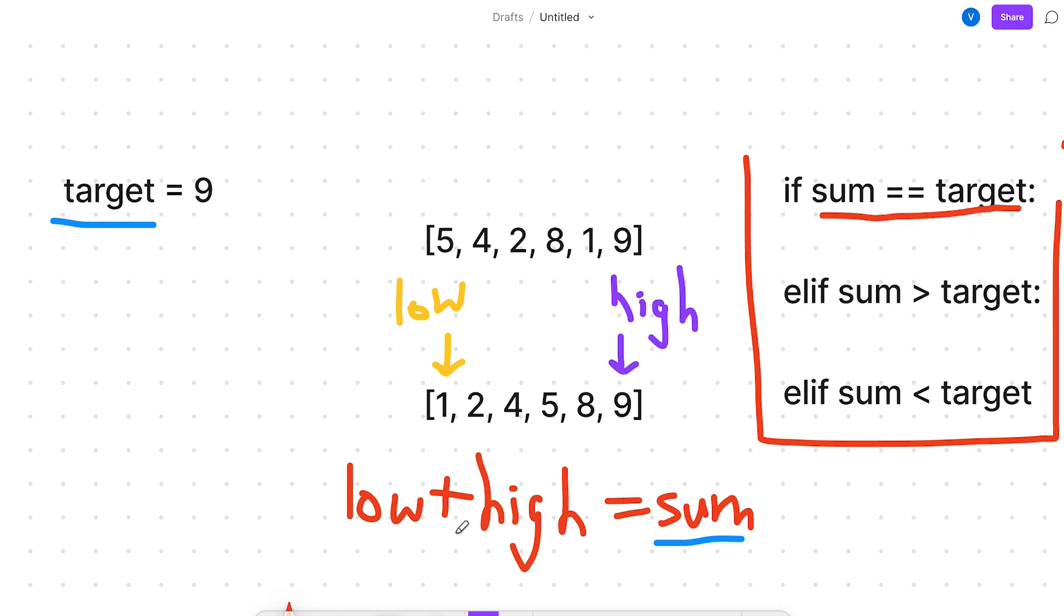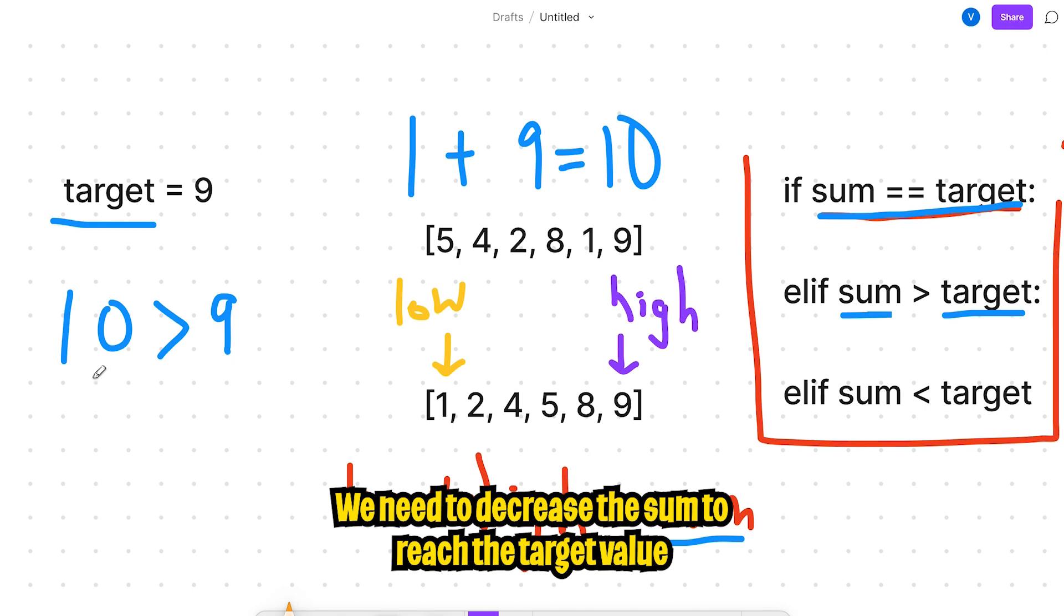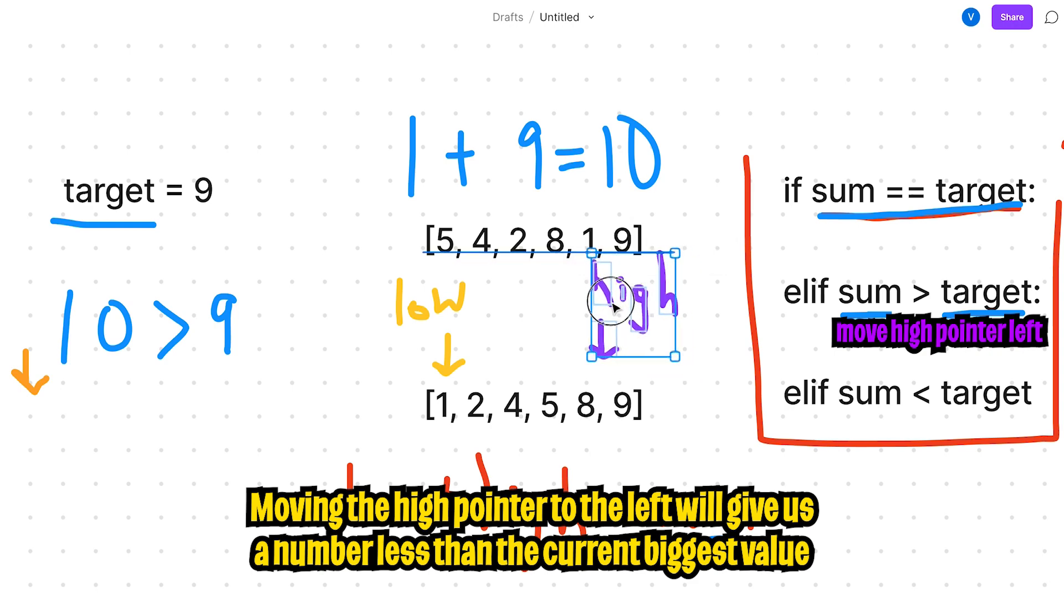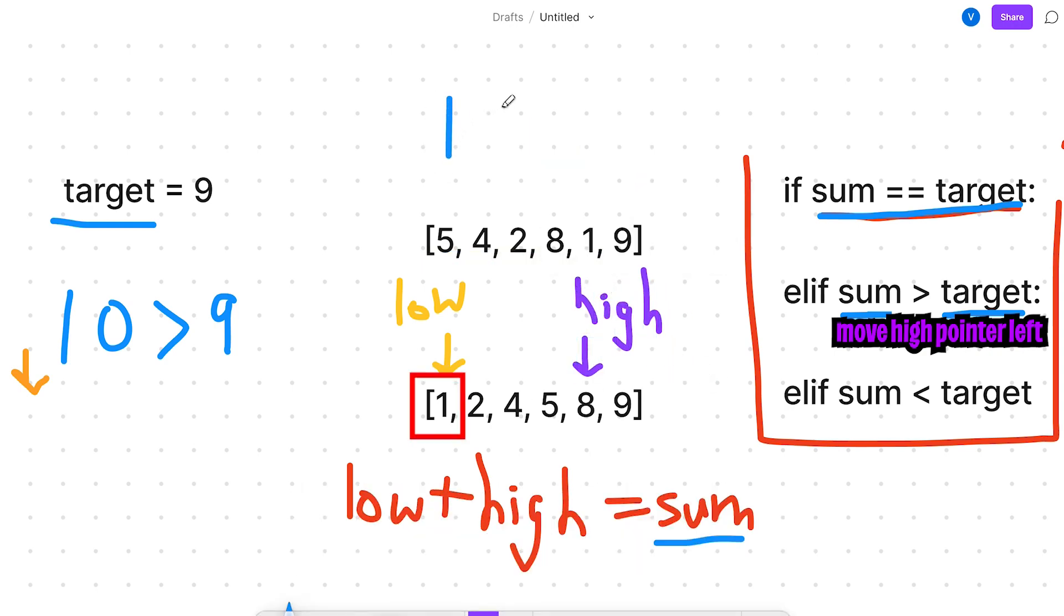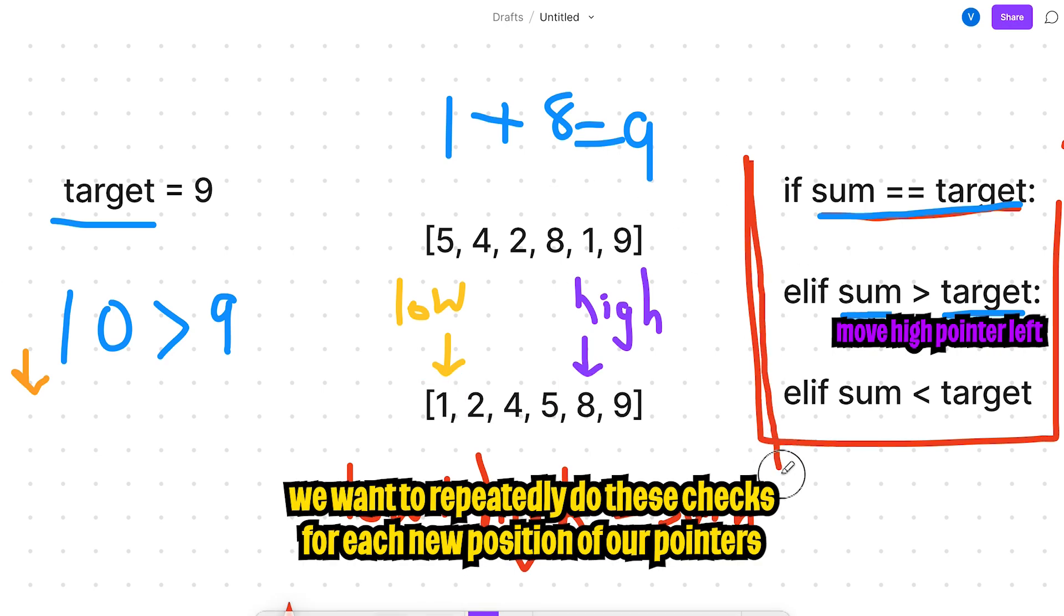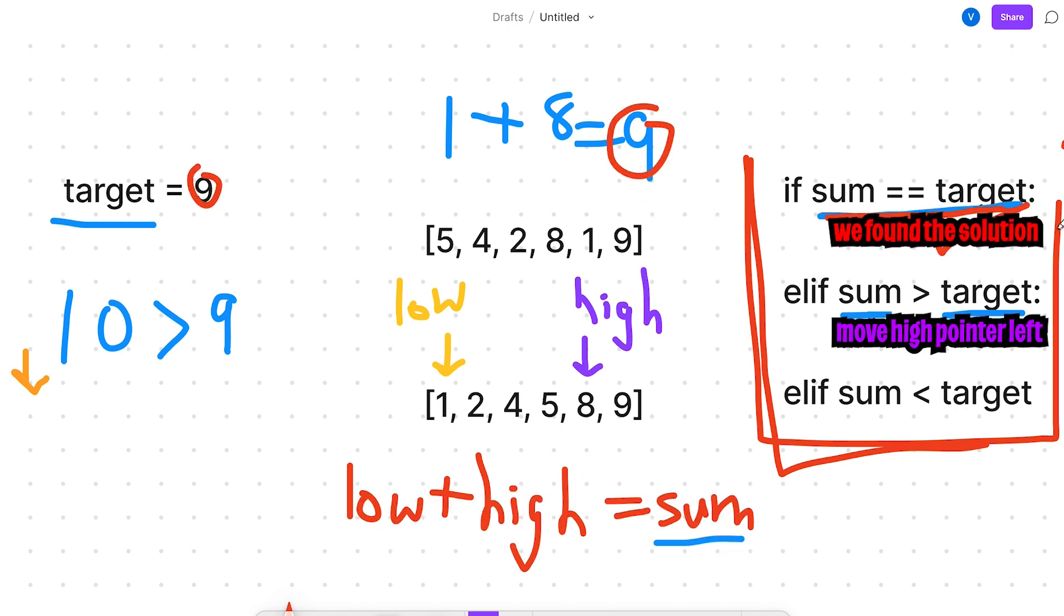The first one is if the sum equals the target. So in this example, our low is 1 and our high is 9. So 1 plus 9 will give us 10. So in this example, 10 does not equal our target. So now we can go to our next case. So now we check, is this sum greater than the target? So in this case, 10 is greater than 9. So when the sum is greater than the target, we want to decrease our sum. To achieve this, all we have to do is move this high pointer to the left. So now our low stays as 1, and now we want to add the new high, which is 8. So now we get 9. So as you can see, moving the high pointer to the left will decrease the sum. And then we want to do these checks again. So now we check if the sum equals the target. And our sum does equal our target. So now we're basically done.